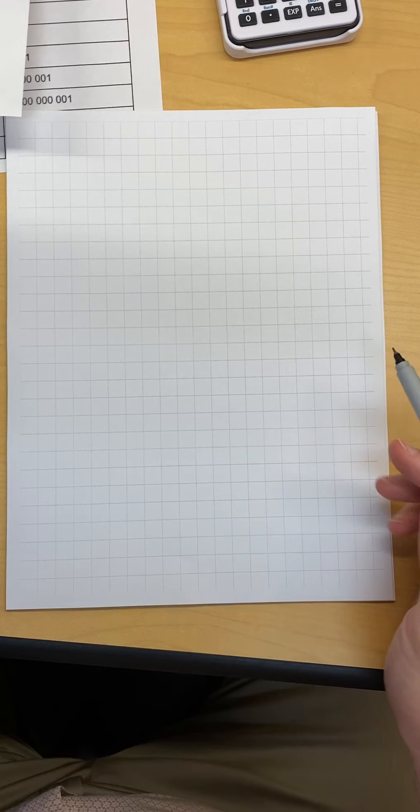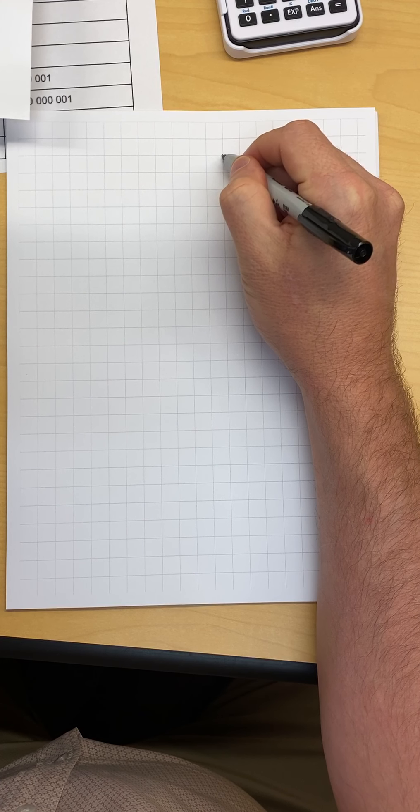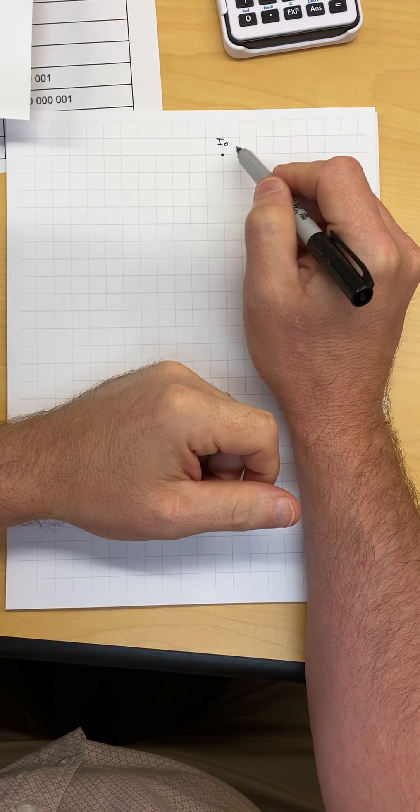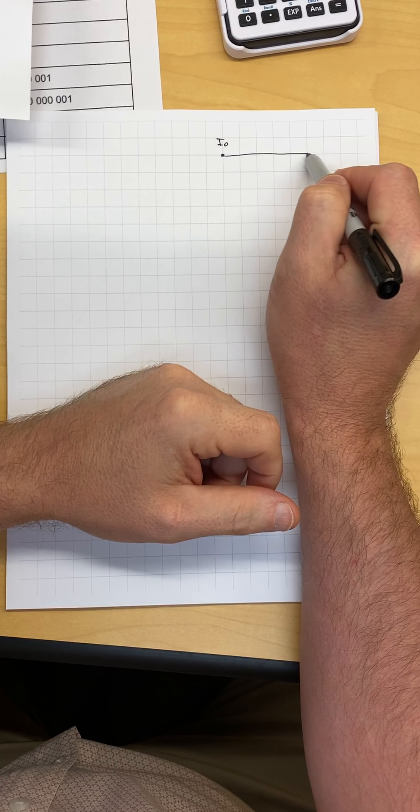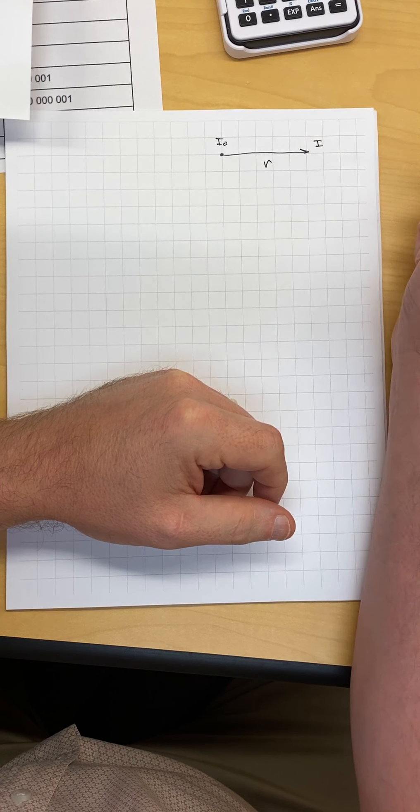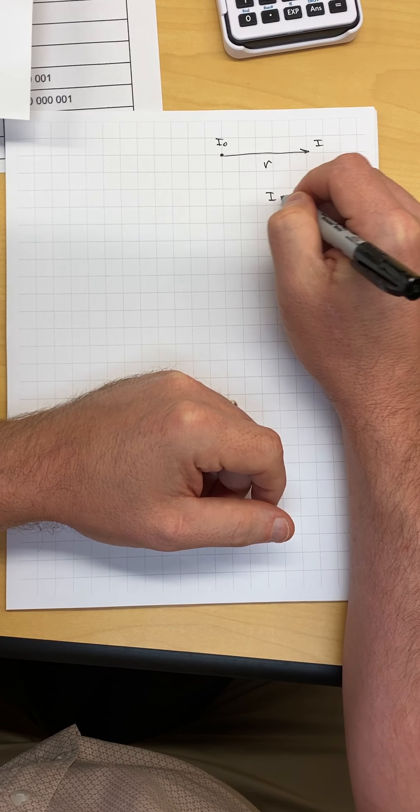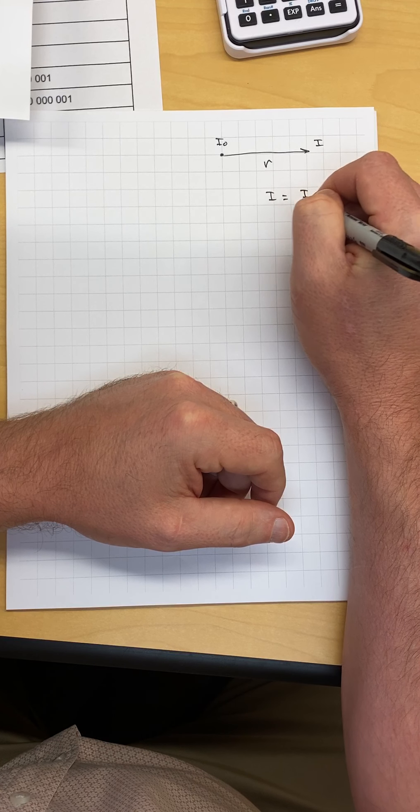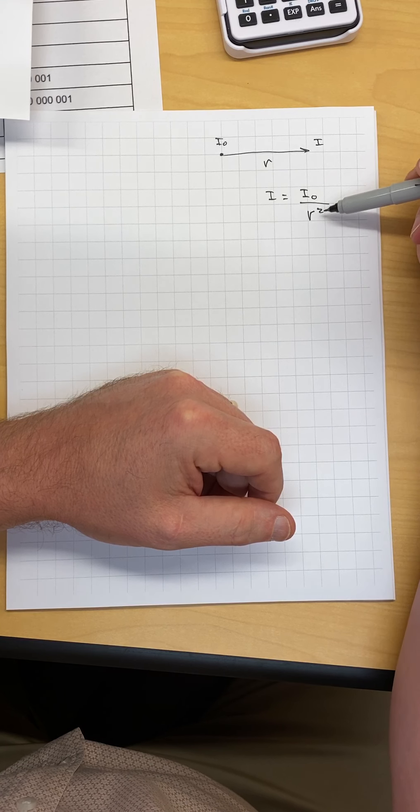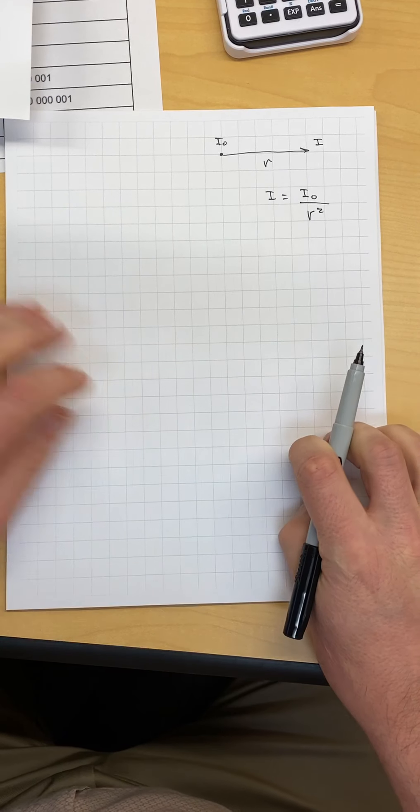So the inverse square law works because we'll have a point source of radiation and there's some sort of initial amount of intensity coming out. And a certain distance away, R, you'll get some intensity out of there. And we know the intensity down the line is I0 divided by R squared. And that's the basics of the inverse square law, the square is inverted and on the bottom.